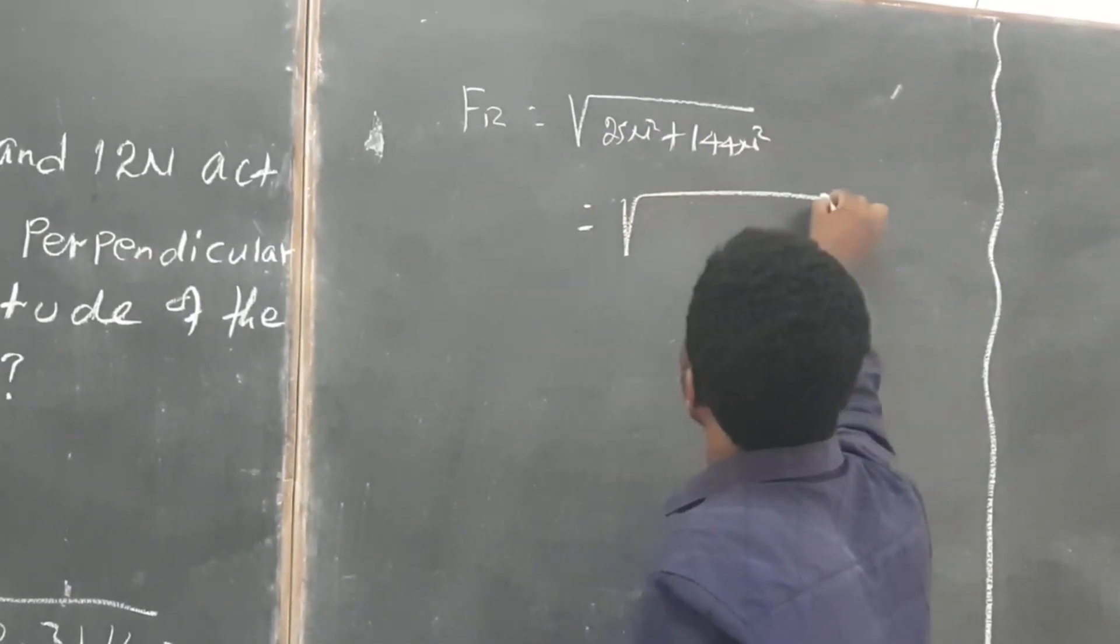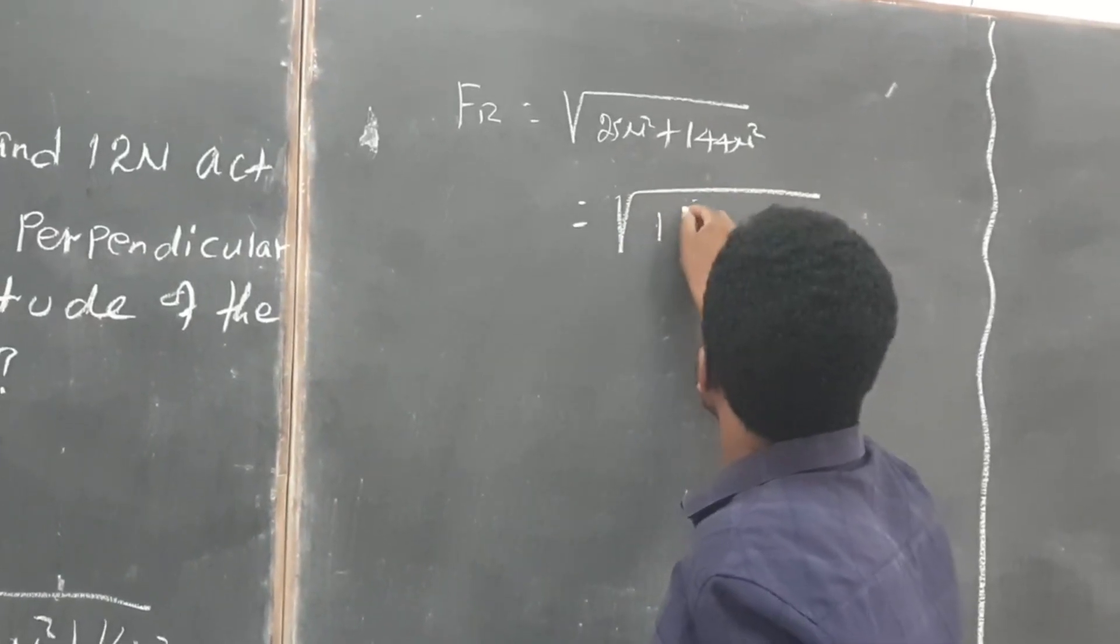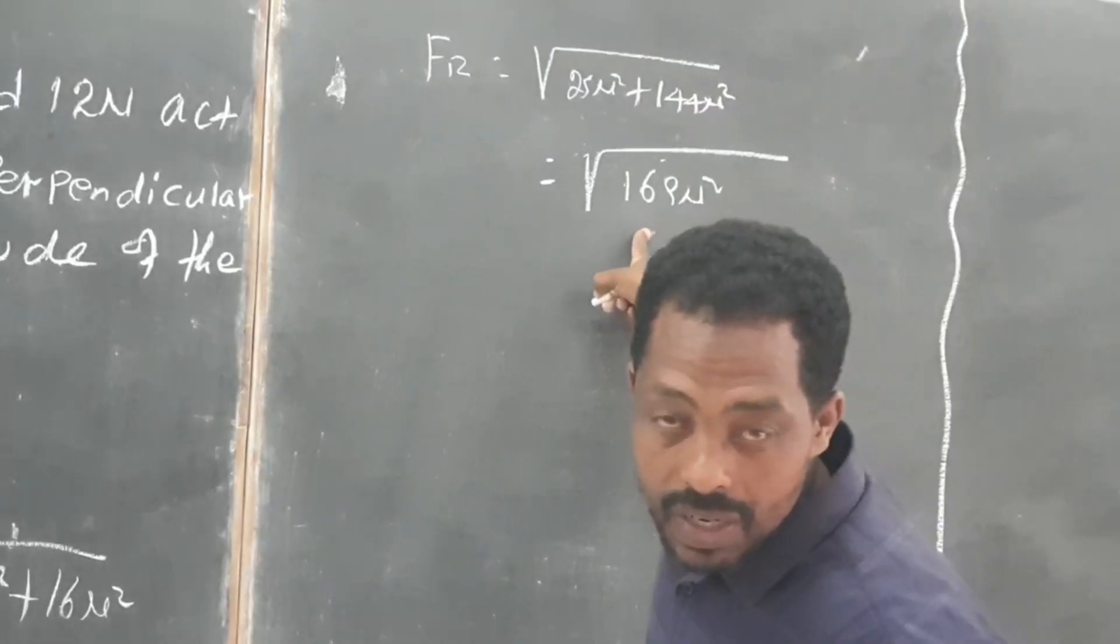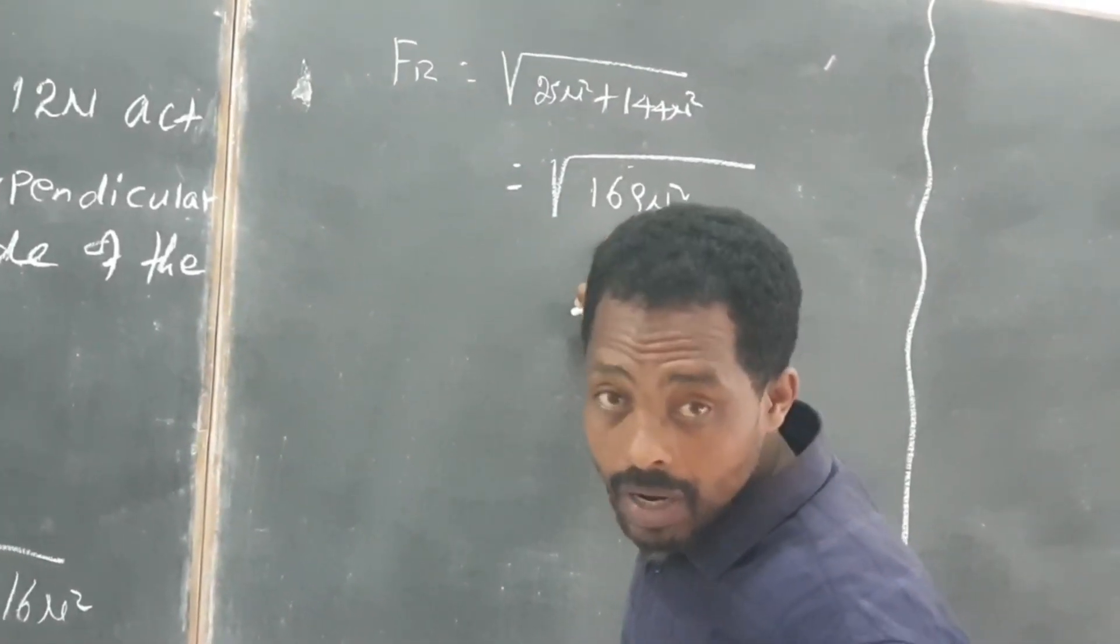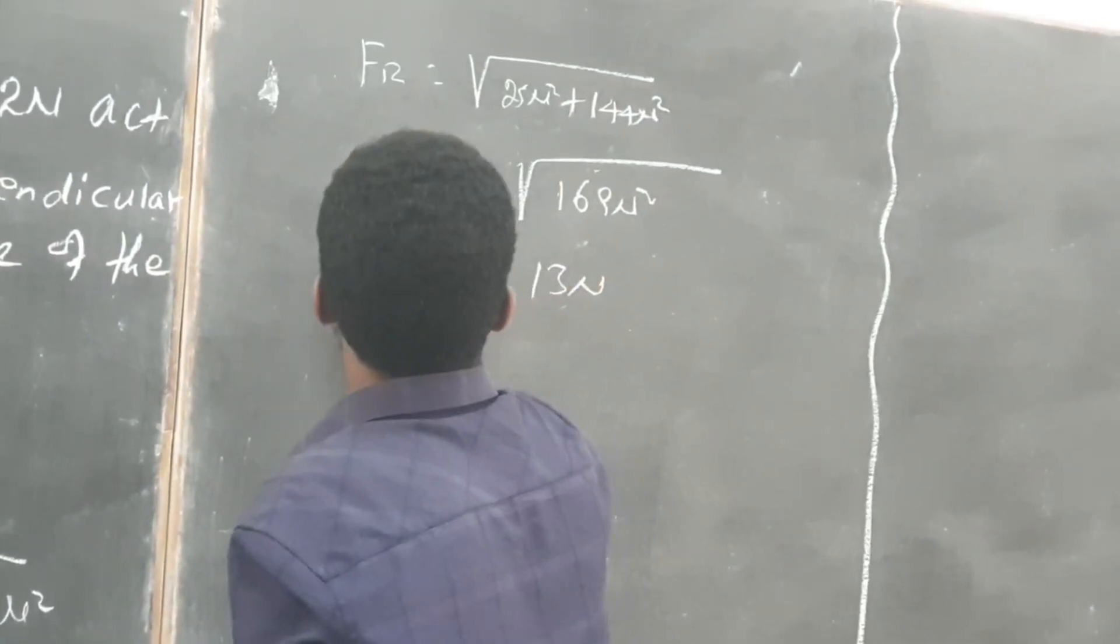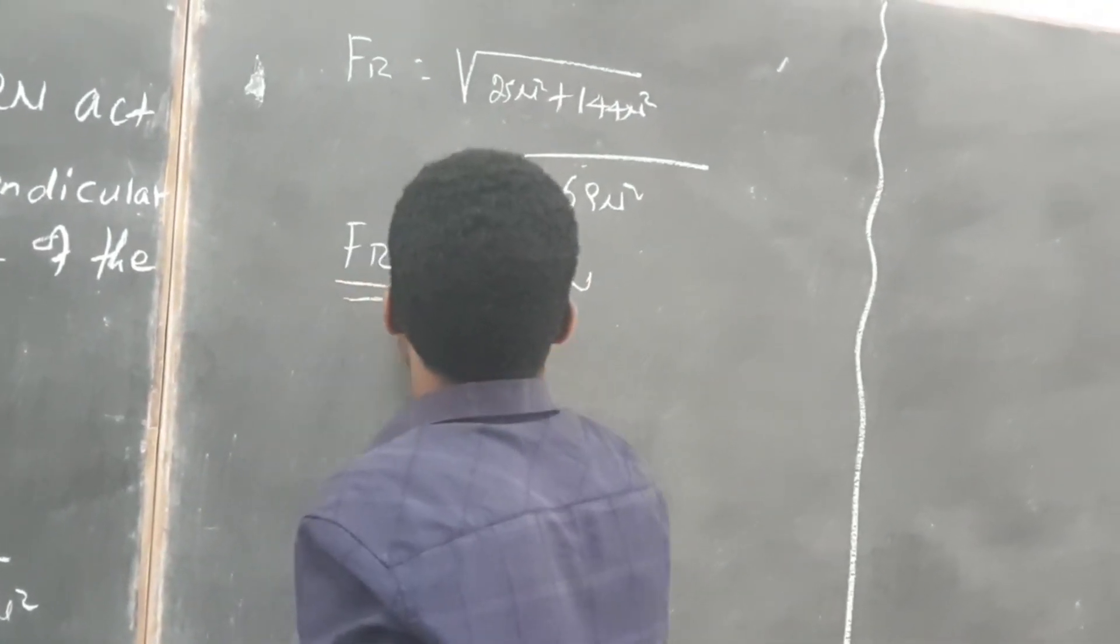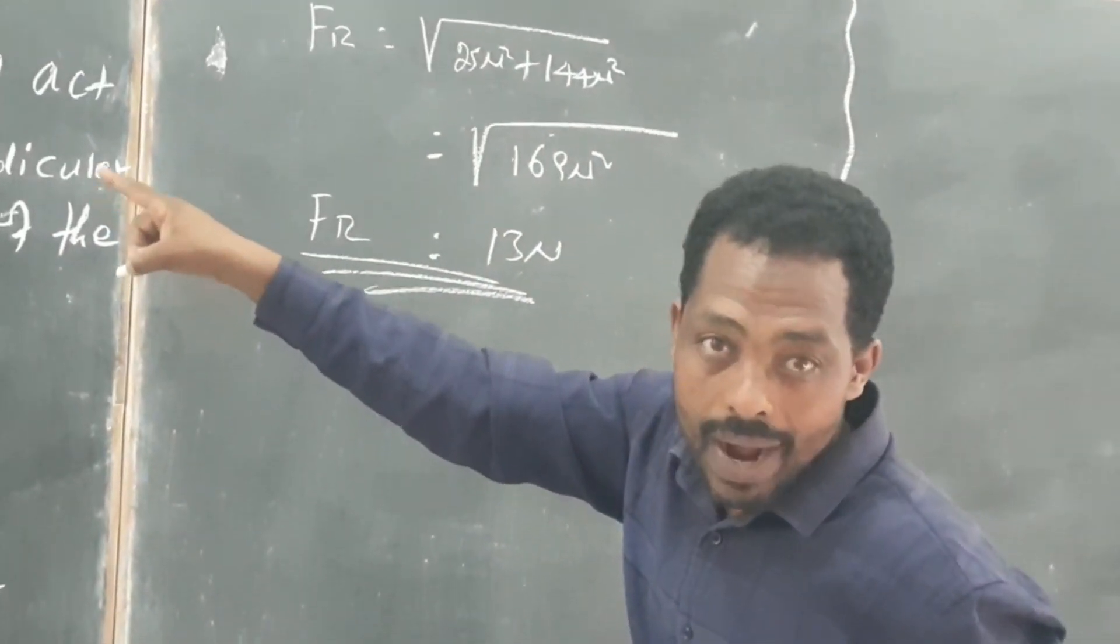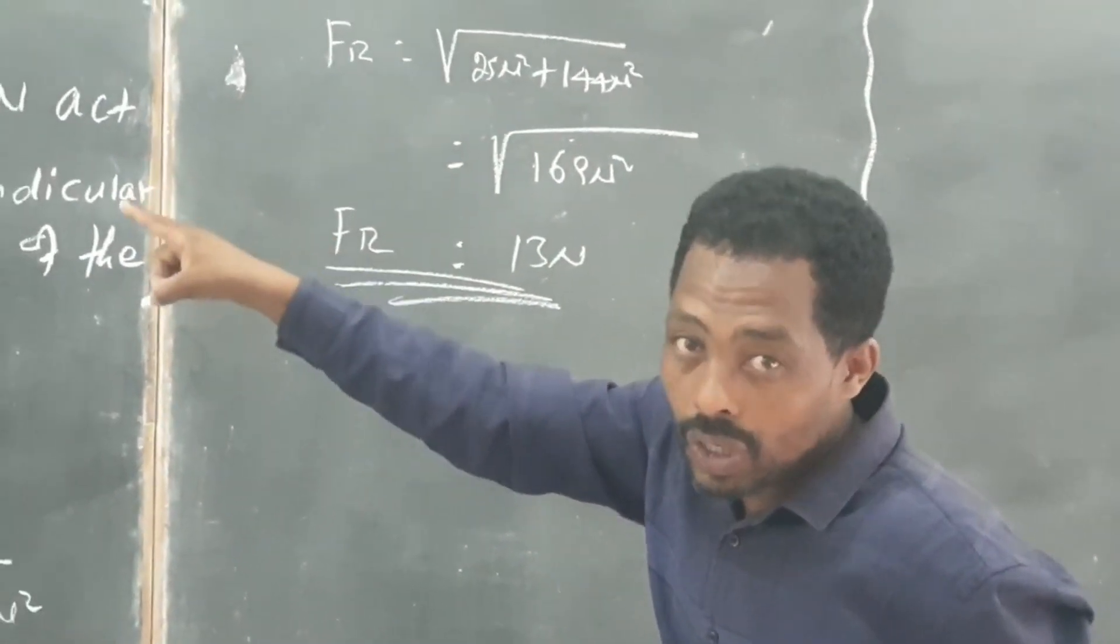So this implies that 169 square of N. Then, as you see, this is 5 Newton squared and then it becomes 13N.